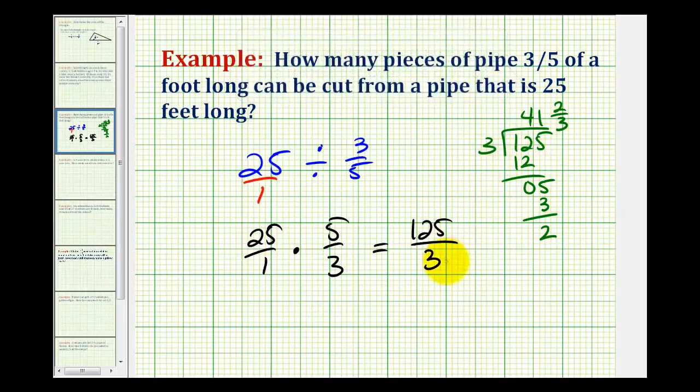So one hundred twenty five thirds is equivalent to forty one and two thirds. But this problem asks for the number of pieces that we can get from this twenty five foot pipe. So we can't count this fraction of a piece. So for this problem, our answer will be forty one pieces of pipe.